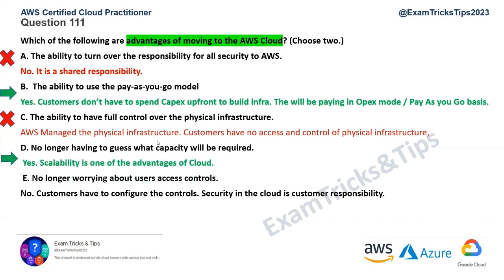The last option — no longer worrying about user access controls — is definitely incorrect. Customers have to configure those controls, as security in the cloud is the responsibility of the customer. So option B and option D are the correct answers for this question.